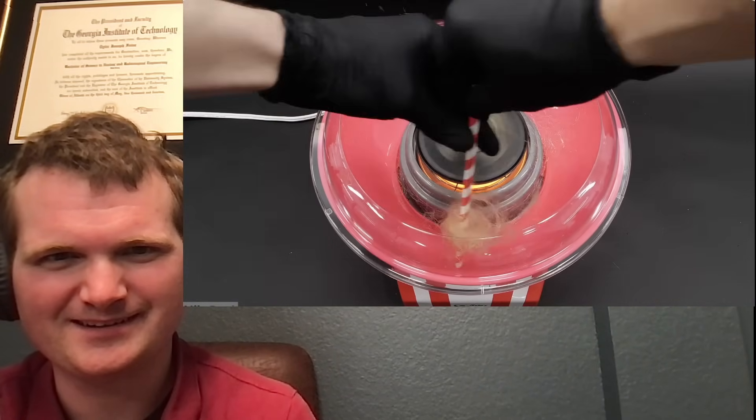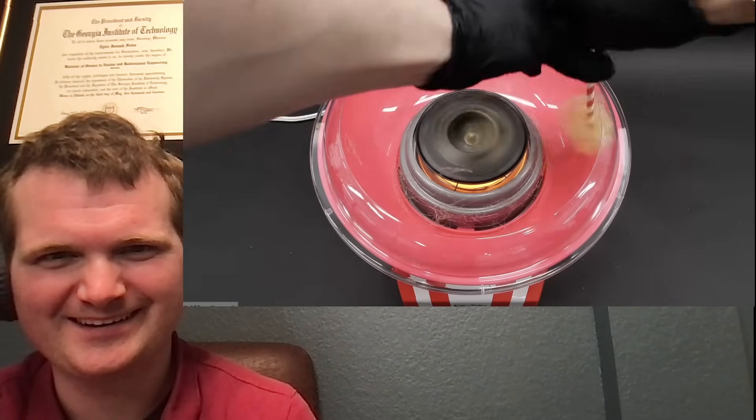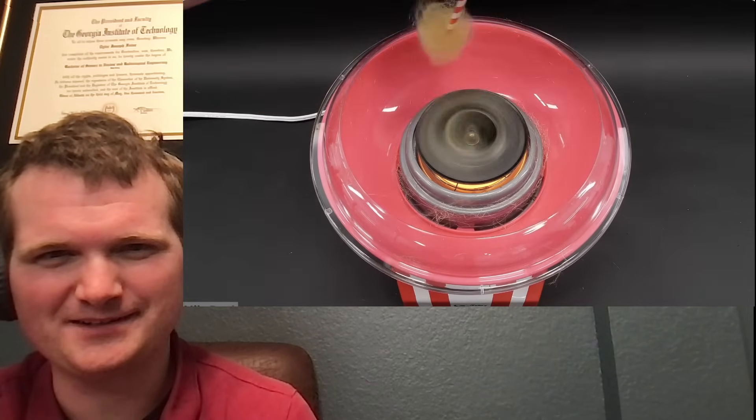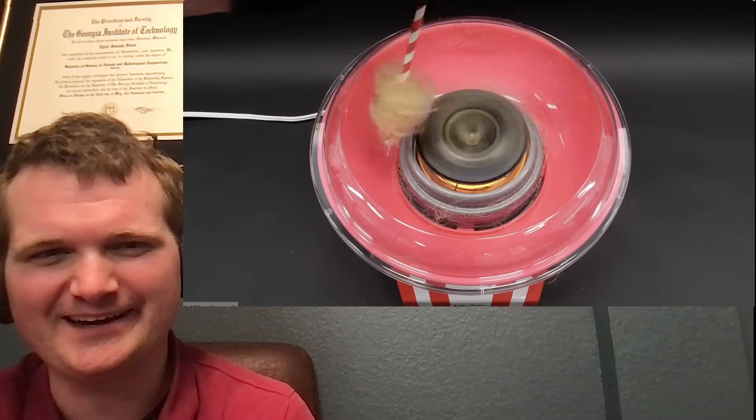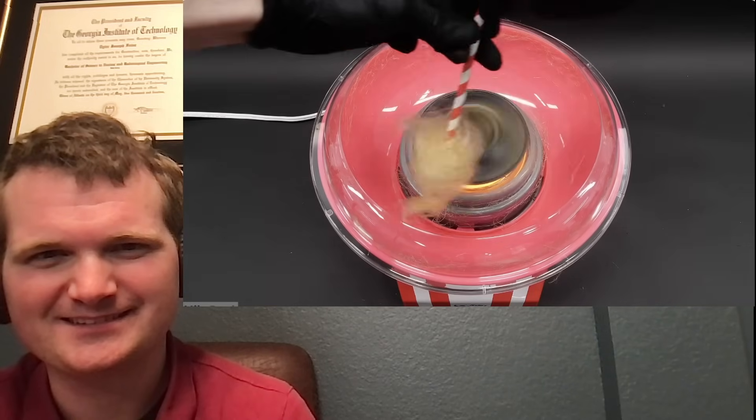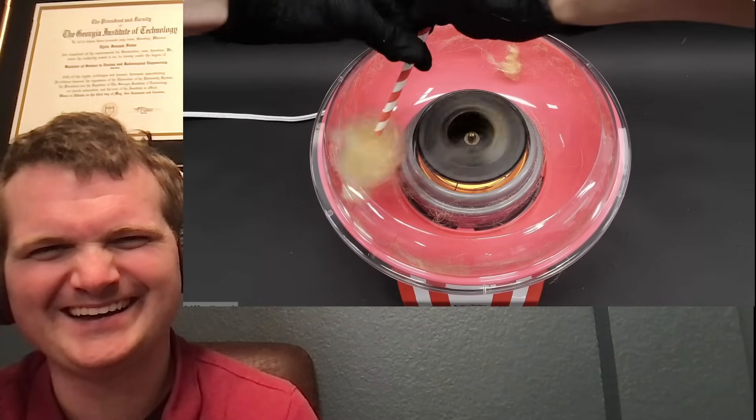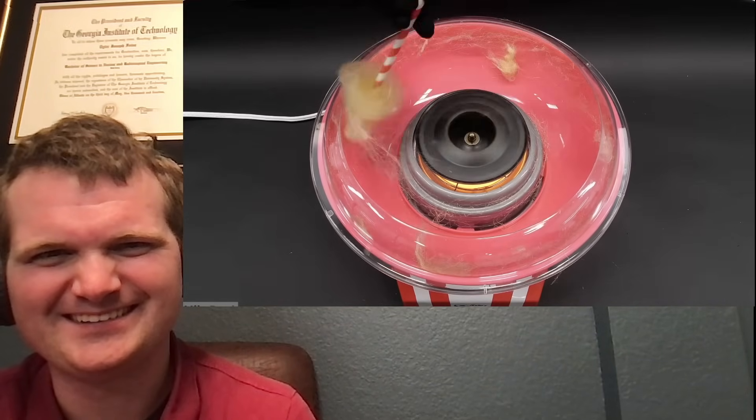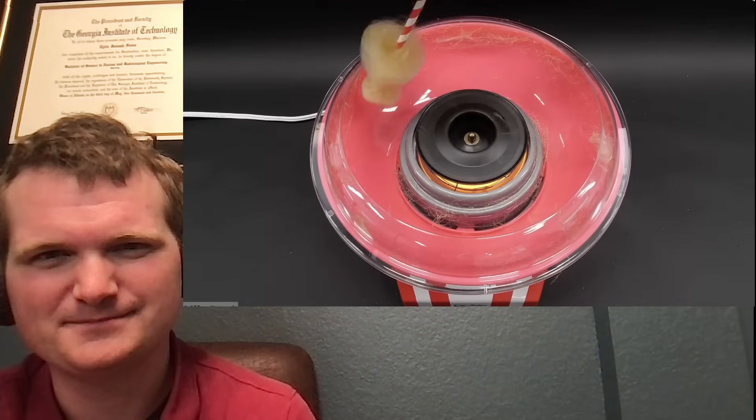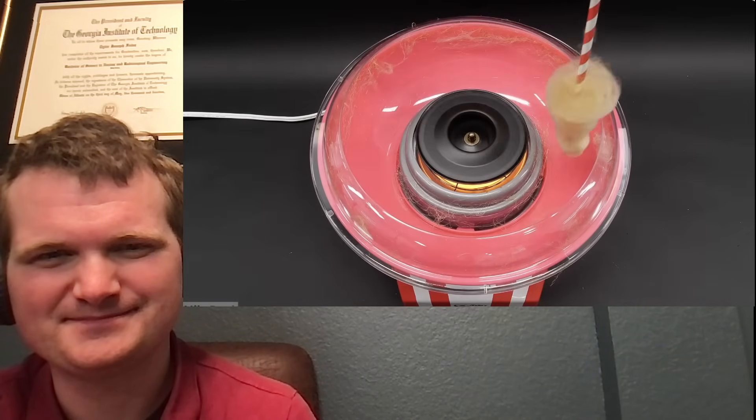The first thing that I noticed though was that it looked a lot thicker than regular cotton candy. I mean, it was all yellow, and the machine sounded like it was dying, but it was still pretty exciting. When it eventually looked like it wasn't making anymore, I turned off the machine.